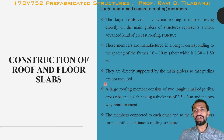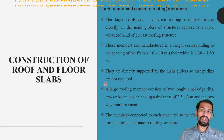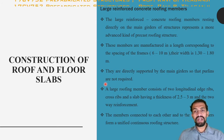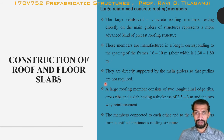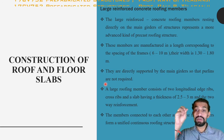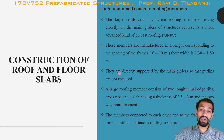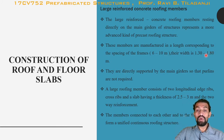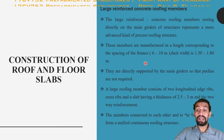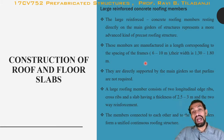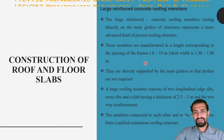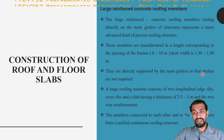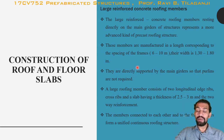Large reinforced concrete roofing members rest directly on the main girders of a structure and represent a more advanced kind of precast roofing. These members are manufactured in lengths corresponding to the spacing of frames, typically 6 to 10 meters, with a width of about 1.3 to 1.8 meters. Because they are directly supported by the main girders, purlins are not required when large panels are used.